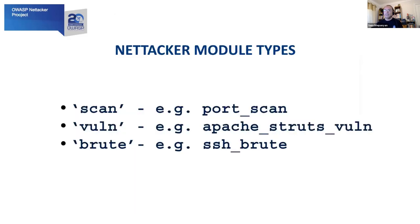NetTacker consists of three types of modules. Modules of type scan — for example, port scan. Modules of type vuln — these are the modules looking for a specific vulnerability. For example, an Apache Struts vuln module will look for the Apache Struts vulnerability. And it has modules of type brute for brute forcing — for example, an SSH brute module will perform brute forcing over the SSH protocol. That's essentially what the module types are, and that's what makes this tool great because it combines three different types of activities: scanning for information gathering, scanning for a specific vulnerability, and brute forcing.